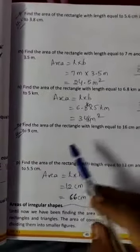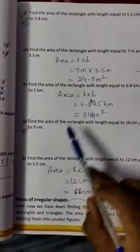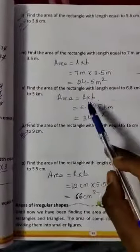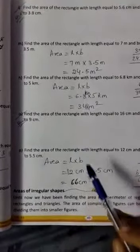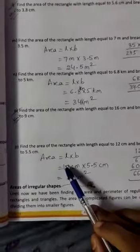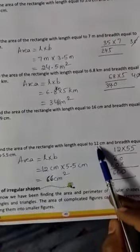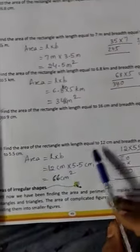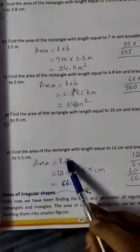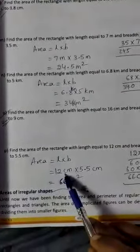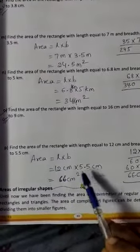Next, problems O, K, and L are your homework. The last problem shown: length is 12 centimeters, breadth is 5.5 centimeters. So, multiply 12 cm × 5.5 cm.